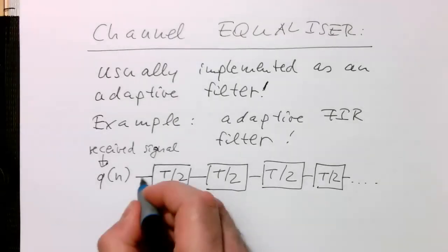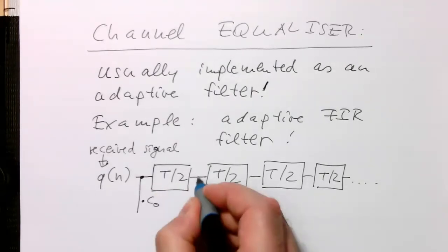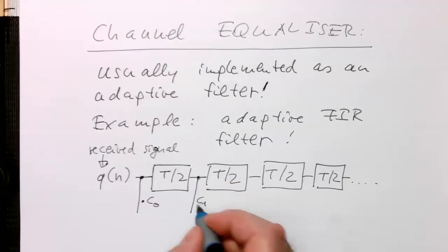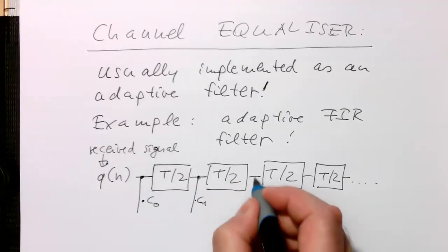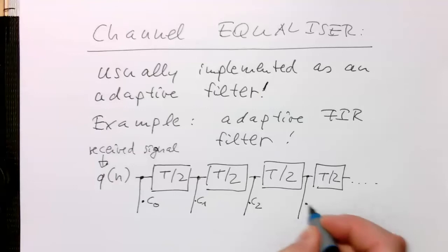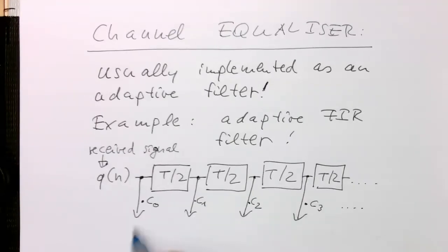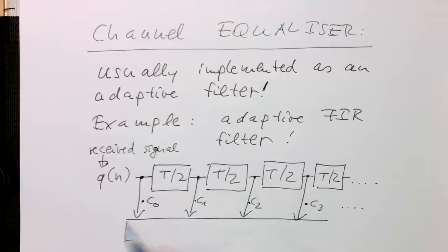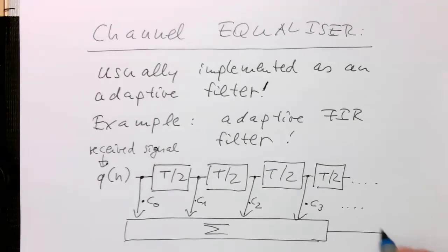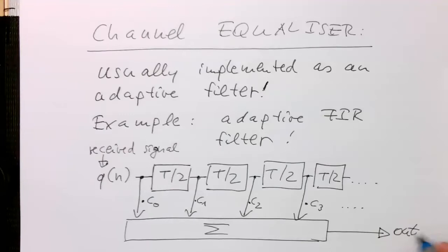And now what we do is we multiply this here by C0, by a factor C0, and this here multiply by a factor C1, and this here by a factor C2, and we multiply this here by a factor C3. So we do this here for many steps and then what we do is we just sum this up here. So we just add this up here and this is the output of our FIR filter here.